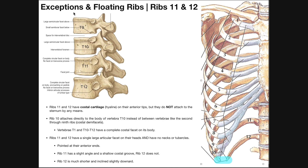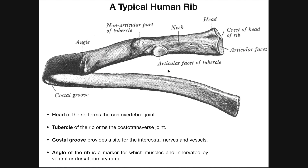Now let's discuss some exceptions about the ribs. Ribs eleven and twelve have a single large articular facet on their heads, and they have no necks or tubercles. On a general rib, the tubercle is where the rib articulates with the transverse process of the corresponding vertebra. However, ribs eleven and twelve do not have this tubercle, so they do not articulate with the transverse processes of T11 and T12. Their head and neck structure is also a little different.